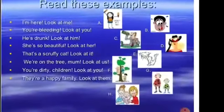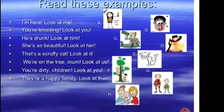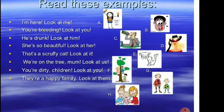Read these examples — with each example there is a photo you can match with it. I am here. Look at me. You are bleeding. Look at you. He is drunk. Look at him. She's so beautiful. Look at her. That's a scruffy cat. Look at it. We are on the tree, mom. Look at us. You are dirty, children. Look at you. They are a happy family. Look at them.